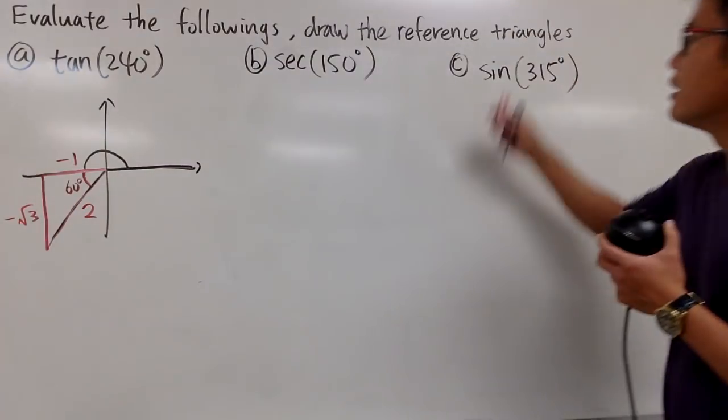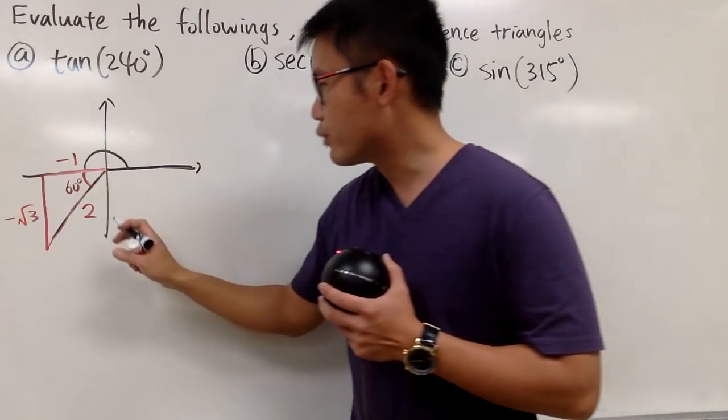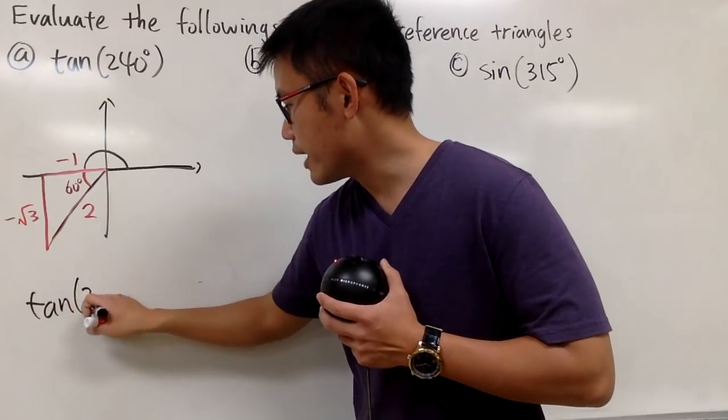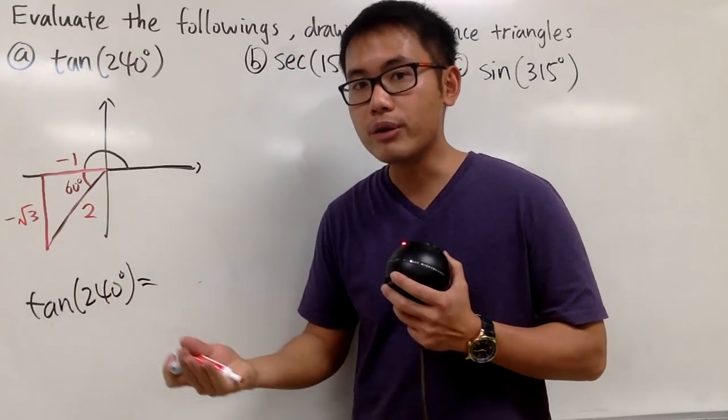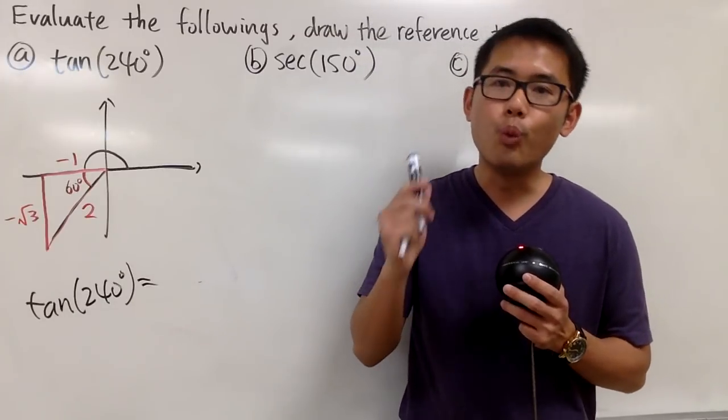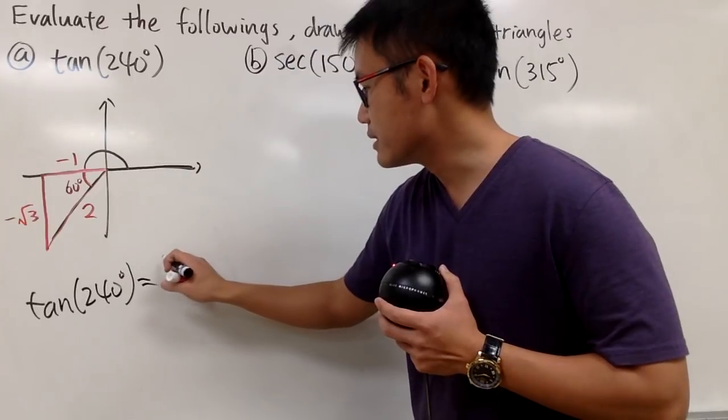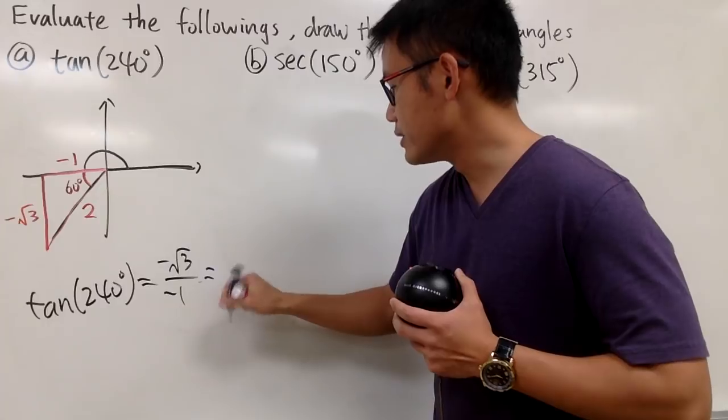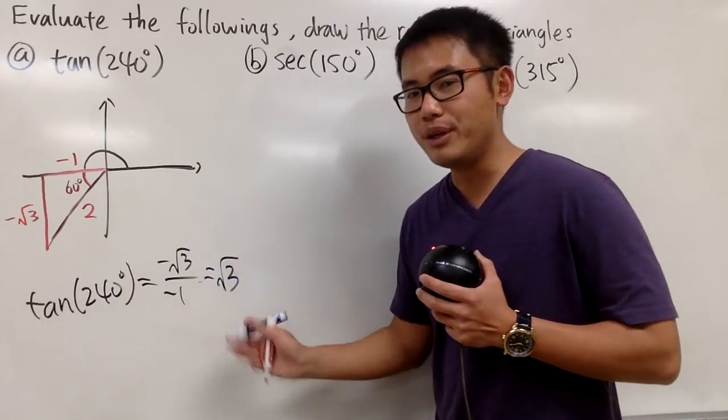So this will be considered a reference triangle. And if you want to figure out tangent of 240 degrees, this is how we can do it. You can look at this picture and see that tangent is equal to y over x. y is this, x is this, so it's negative square root of 3 over negative 1. And of course, you can just simplify this. In the end, you get positive square root of 3.